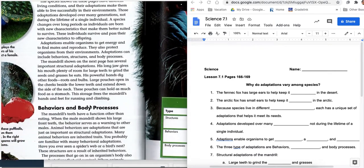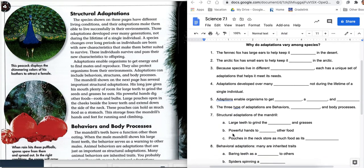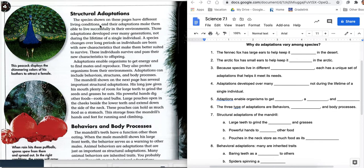Let's talk about these different adaptations and break it down into categories. The species shown on these pages have different living conditions and their adaptations make them able to live successfully in their environment. Those adaptations develop over many generations, not during a lifetime of a single individual. So generations for number four, but understand the questions that we can ask you, true or false. An animal will develop structural adaptations during its lifetime. No, it takes generation after generation. This happens over a long period of time. A species changes over long periods as individuals are born with new characteristics that make them better suited to survive. These individuals survive and pass their new characteristics onto their offspring.